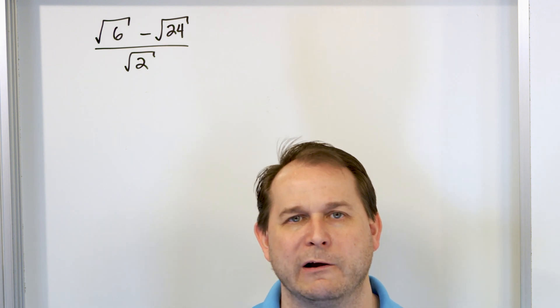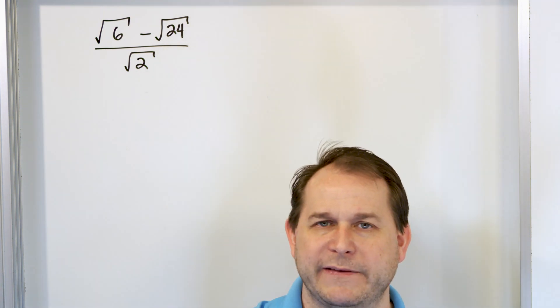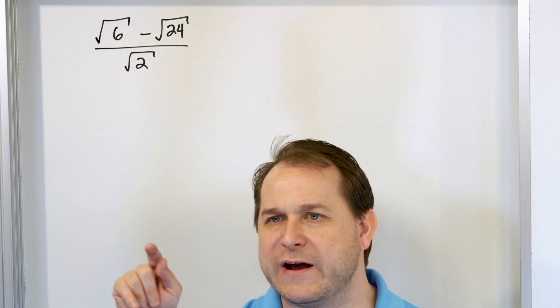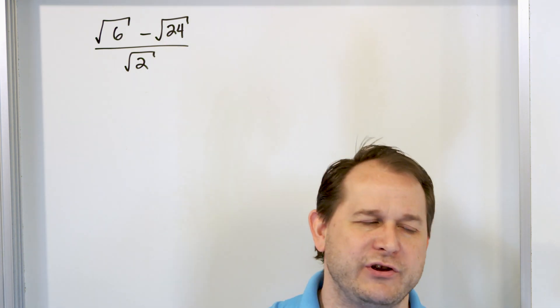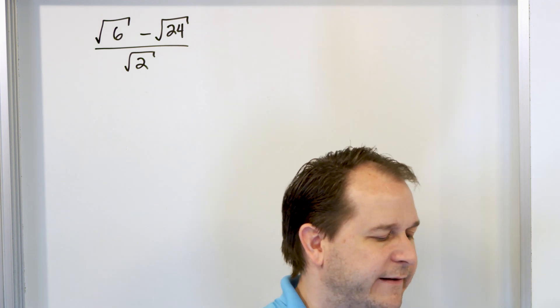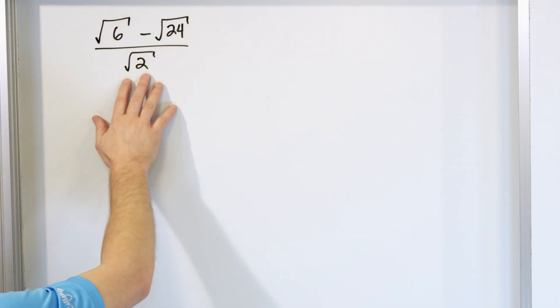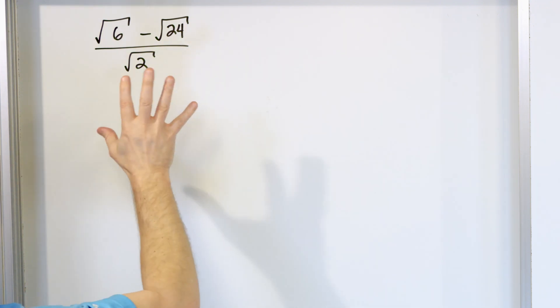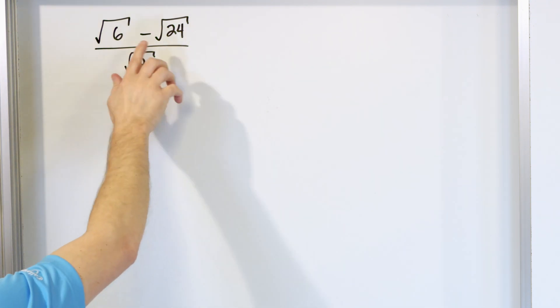So you can get in a situation where you clear the radical in the denominator, you do all that work. Then you have something on the outside that multiplies in and you get another radical on the bottom, and then you have to do the whole thing again. So in this case, let's just hang on to that square root of 2. I know it's tempting to multiply by square root of 2 over square root of 2 and you can do that. But for now, let's just focus on the numerator.